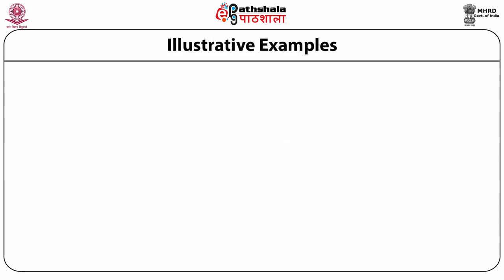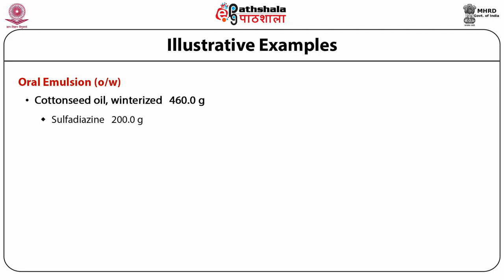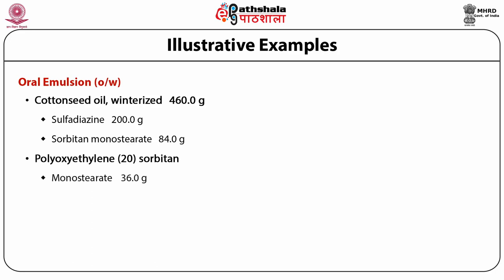We will now discuss the preparation of an oil-and-water type oral emulsion. The composition includes: cotton seed oil 460 g, sulfadiazine 200 g, sorbitan monostearate 84 g (portion A); polyoxyethylene 20 sorbitan monostearate 36 g, sodium benzoate 2 g, sweetener q.s., and potable water up to 1000 g (portion B); with flavor oil q.s. (portion C).